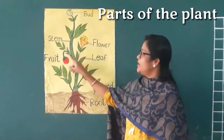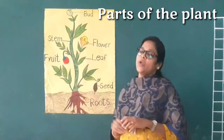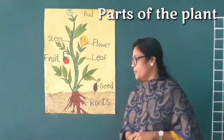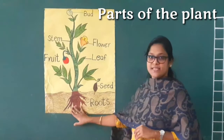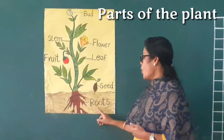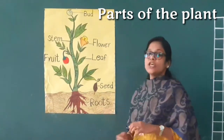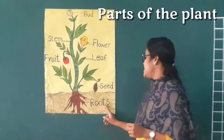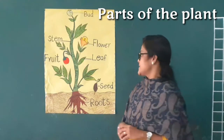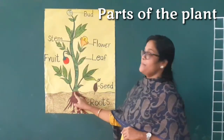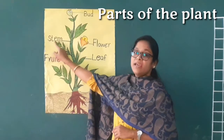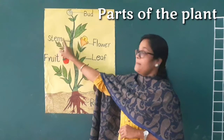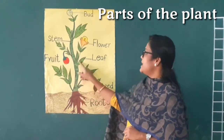Now it's time to spell and learn the parts of the plant. Are you ready children? Come on, let's spell them. Roots — R-O-O-T-S, roots. R-O-O-T-S, roots.